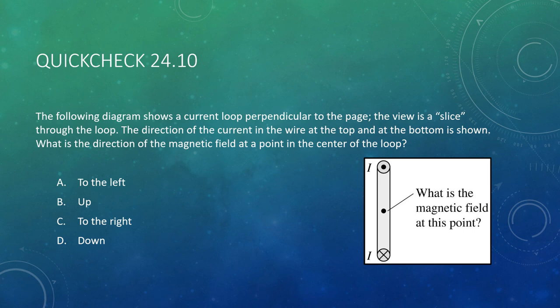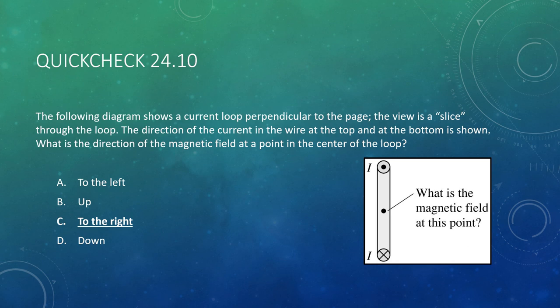Next: a current loop perpendicular to the page is shown as a slice-through, with current coming out of the page at the top and into the page at the bottom. What is the direction of the magnetic field at the center? At the top, thumb points out of screen, fingers curl around and point right at the center. At the bottom, thumb points into screen, fingers also point right at center. Either way, the magnetic field at center points to the right.